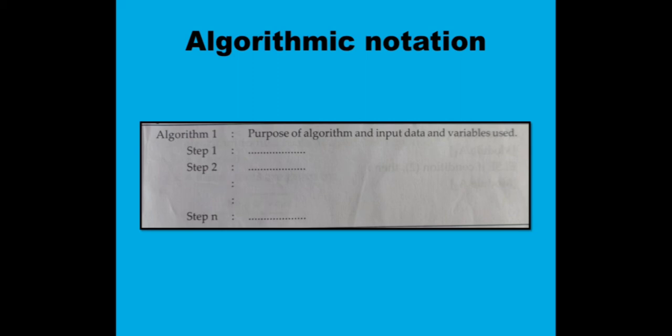So what are the steps? Take one number, take the second number, add those two numbers, and provide the output. This is the basic algorithm. Whenever you are storing data or performing data operations, you need algorithmic notation. An algorithm is a finite step-by-step list of well-defined instructions for solving a particular problem.